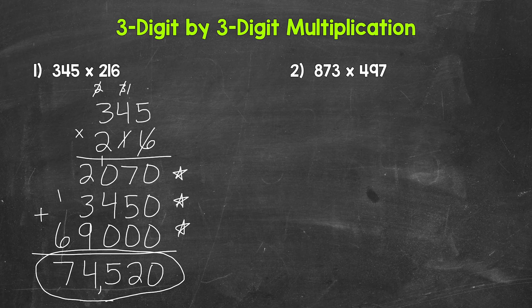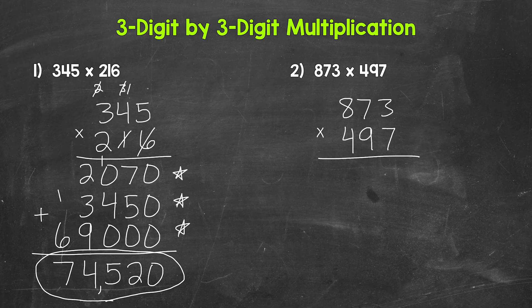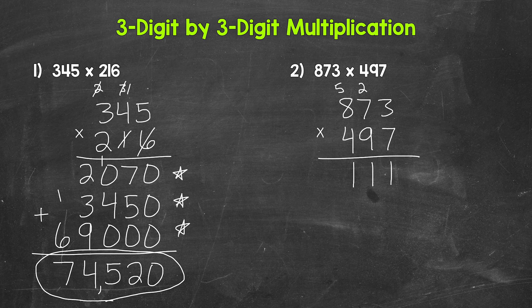Let's move on to number two, where we have 873 times 497. Let's set this up: 873 times 497. We'll start with the seven, and we have seven times three. That gives us 21. Carry the two. Then we have seven times seven, which is 49, plus two is 51. Carry the five. Then we have seven times eight, which is 56, plus five is 61. And now we are done with this seven, done with this two, and done with this five.